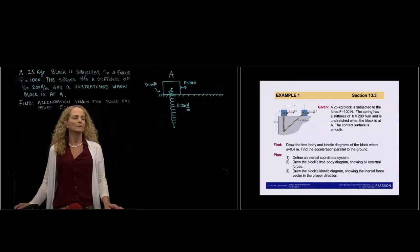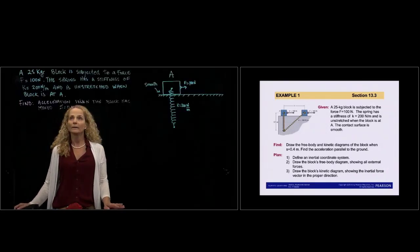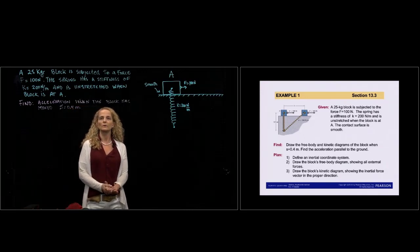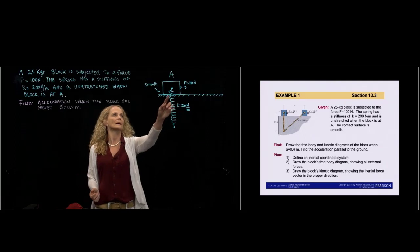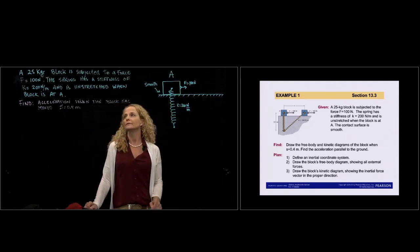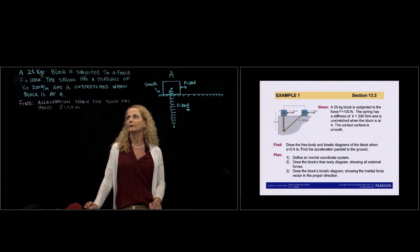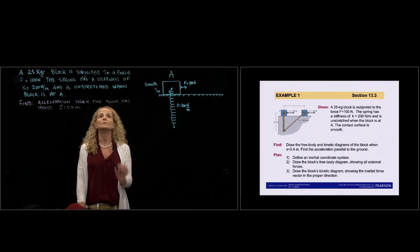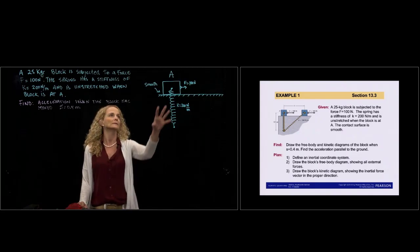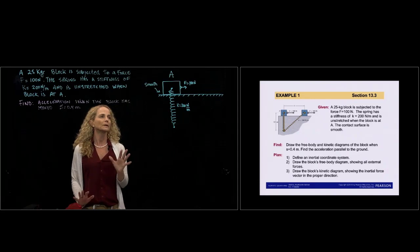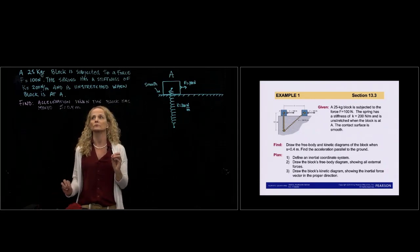This is example number one of chapter 13. We have a 25 kilograms block subjected to a force F of 100 newtons. The spring has a stiffness of K equals 100 newtons per meter — this is the constant of the spring. It's unstretched when the block is located at point A, so right there the spring is not doing any force because it's unstretched.